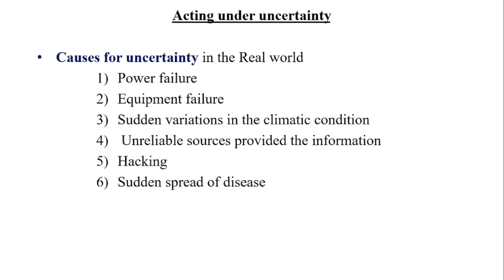Next, we can see some of the causes for uncertainty in the real world. They are power failure, equipment failure, sudden variations in the climatic condition, unreliable sources that provided the information, hacking, and sudden spread of diseases.